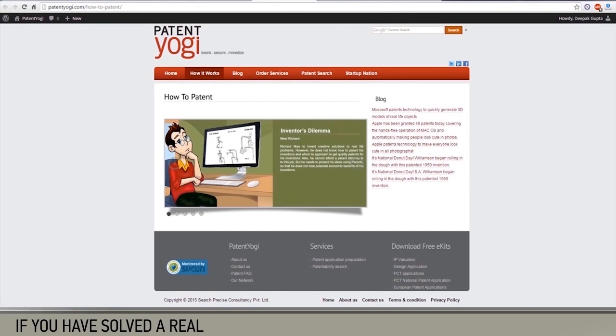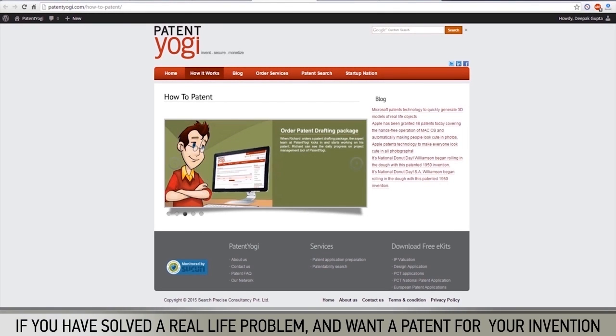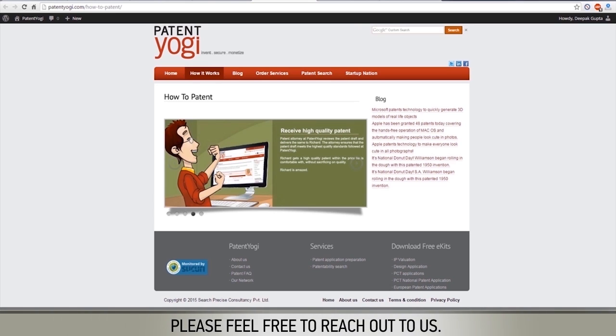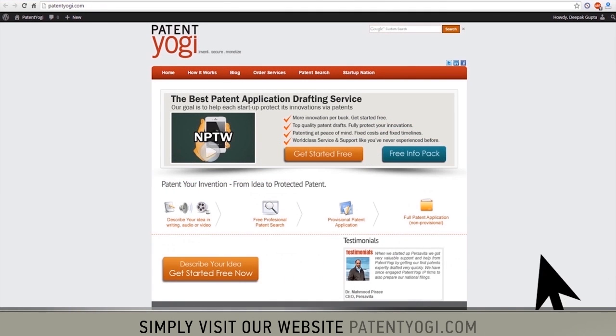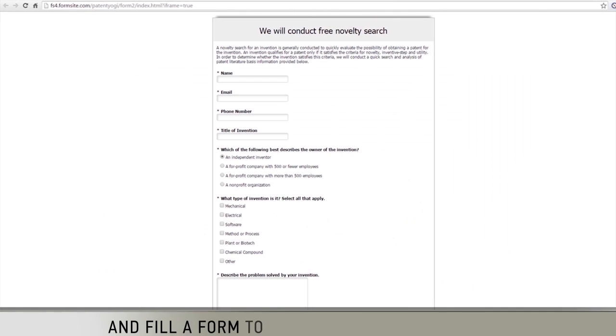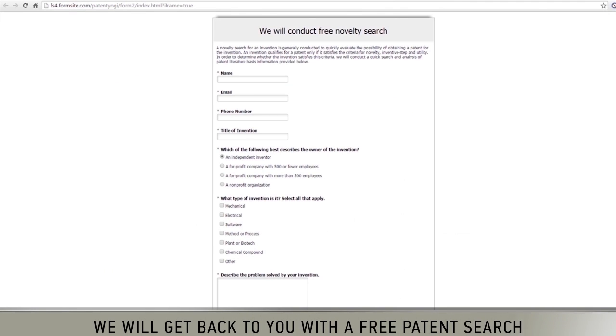If you have solved a real-life problem and want to patent your invention, please feel free to reach out to us. Simply visit our website patentyogi.com and fill a form to send your invention details. We will get back to you with a free patent search.